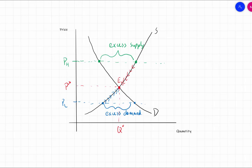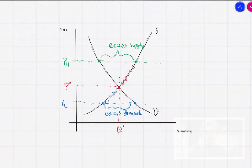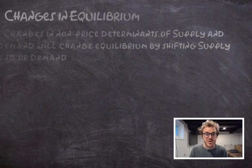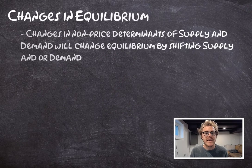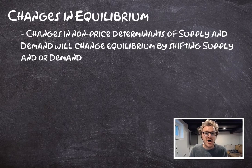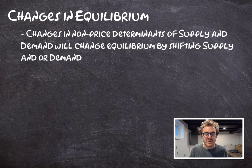This is why equilibrium is almost an absorbing state — if we're out of equilibrium, market forces are going to push us back. As discussed previously, there are non-price determinants of both demand and supply. When there are changes in these non-price determinants, we have shifts in supply and demand curves. Now let's use this equilibrium framework to look at what happens when we have changes in these non-price determinants of supply or demand.